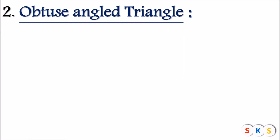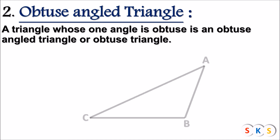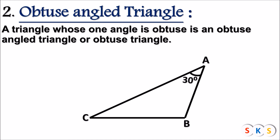Obtuse Angle Triangle: a triangle whose one angle is obtuse is called an obtuse angle triangle or obtuse triangle. Look at this triangle. Here, angle A is 30 degrees, angle B is 120 degrees, and angle C is 30 degrees. You can see that angle B is 120 degrees, which means it is an obtuse angle. So, this triangle has one obtuse angle, and hence it is called an obtuse angle triangle.